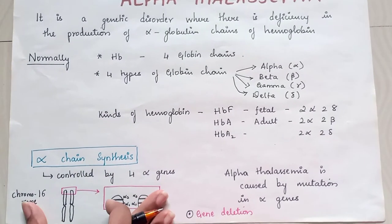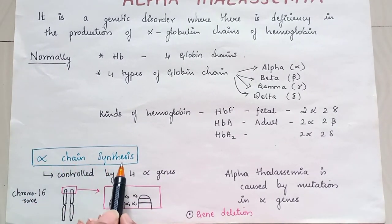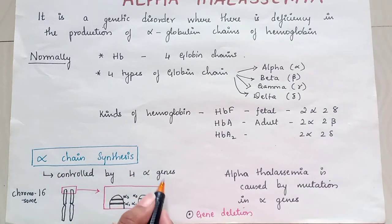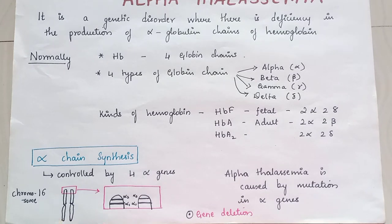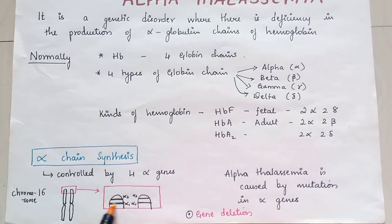In alpha chain synthesis, it is controlled by 4 alpha genes which are present on chromosome 16. Here you can see that on each chromosome, alpha 1 and alpha 2 chains are present. If there is any mutation, disturbance, or gene deletion, it will lead to alpha thalassemia.